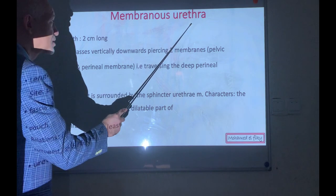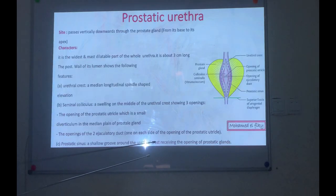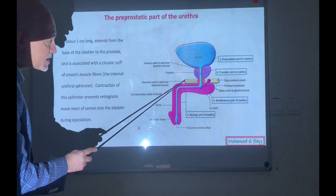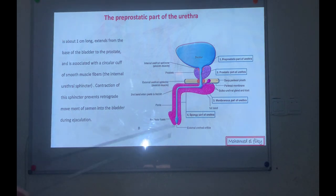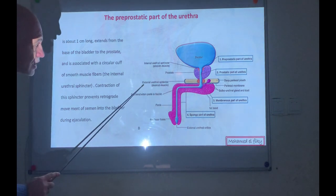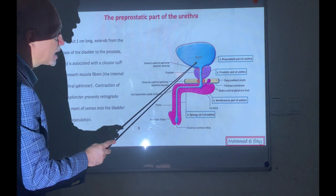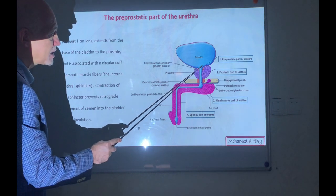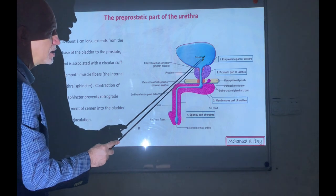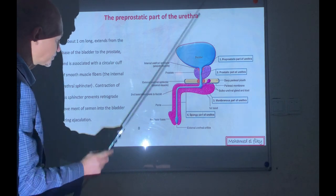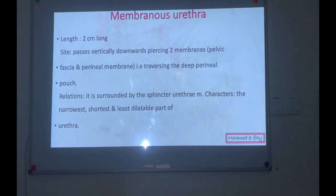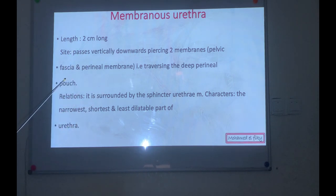The membranous urethra is about 2 centimeters and is present in the deep perineal pouch. It is surrounded by the external urethral sphincter. The internal urethral sphincter surrounds the neck of the bladder and the pre-prostatic part, while the external urethral sphincter surrounds the membranous urethra in the deep perineal pouch.